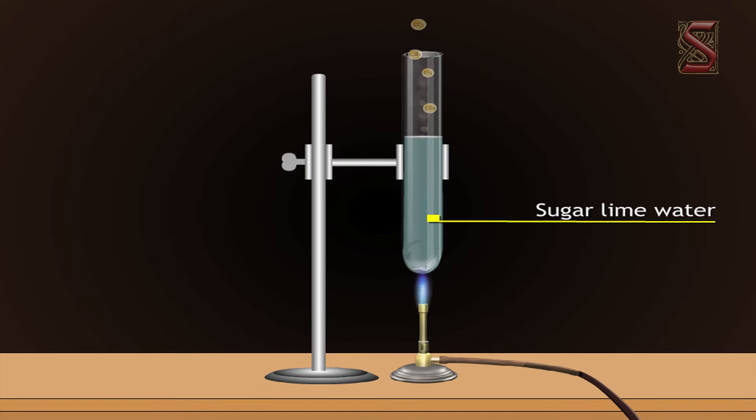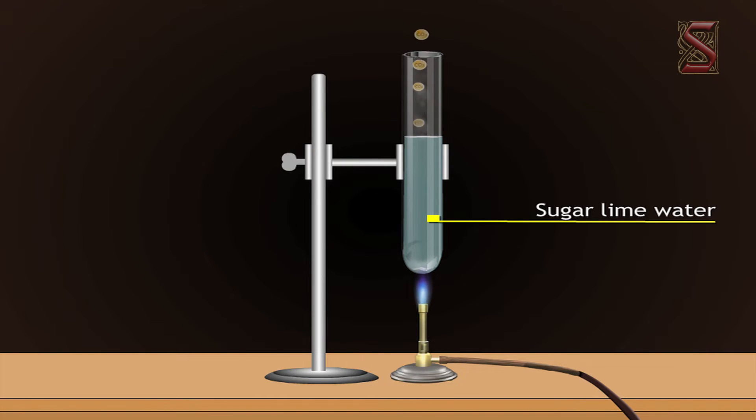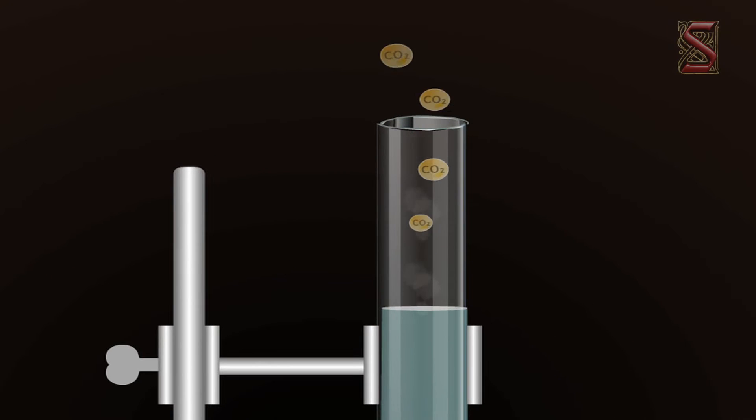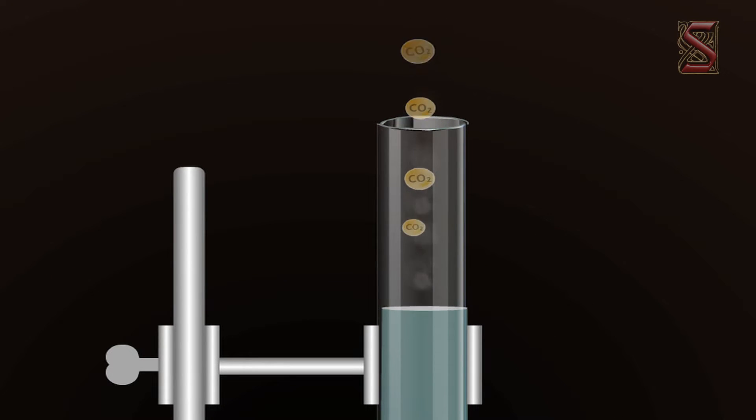The gas produced by burning sugar also turns lime water milky. This shows that carbon dioxide is given out both during respiration and when glucose is burned.